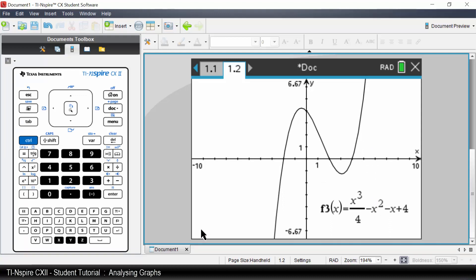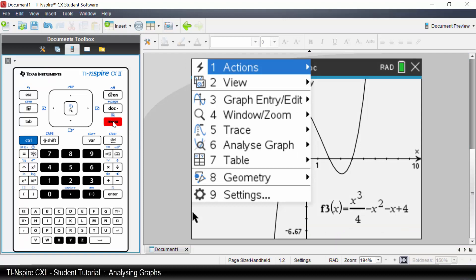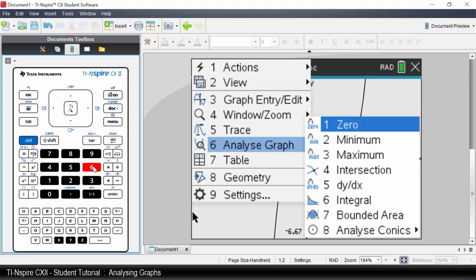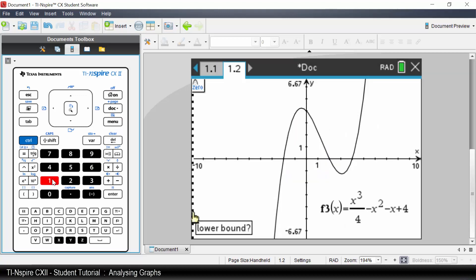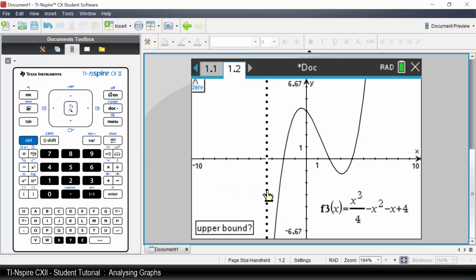Let's determine the zeros. Press Menu. Select Analyze Graph. Select Zero. Move the cursor to the left of the first zero. Select it and move it to the right of the zero and select it. So the zero is negative 2, zero.